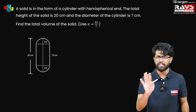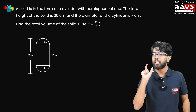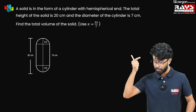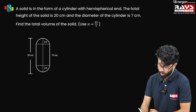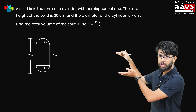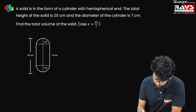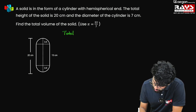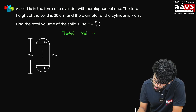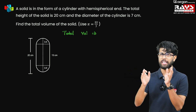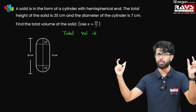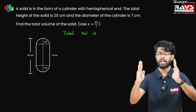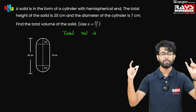The diameter of the cylinder as well as the diameter of the hemisphere will be the same. We don't need diameter — we need radius. The radius of both hemisphere and cylinder will be the same, that is 7 by 2, which is 3.5 cm. I have already drawn a good figure for better understanding. We have to find the total volume. This solid is divided into three parts: one cylinder and two hemispheres at both ends. The total volume will be the volume of the cylinder plus the volume of the two hemispheres.